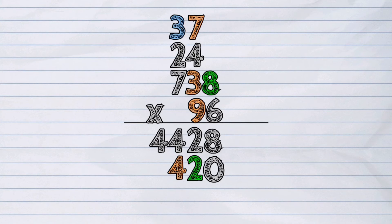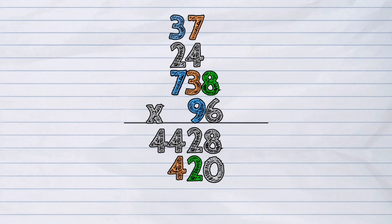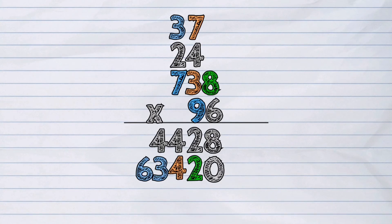Lastly, 9 times 7 is equal to 63 plus 3 is equal to 66.